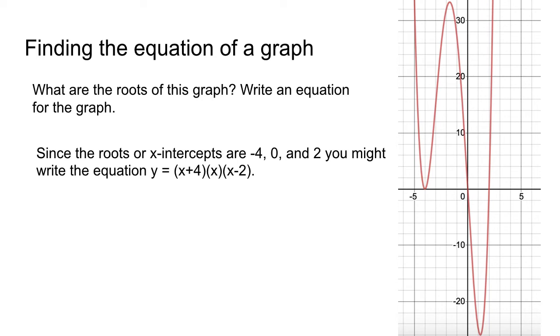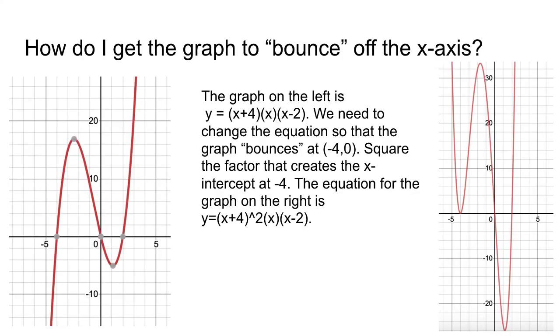But if we were to graph that (x + 4) times x times (x - 2), we would get this graph on the left. So here again I have a graph that has an intercept at (-4, 0), (0, 0), and (2, 0). But we don't want it to go through at negative 4, we want it to bounce off like the graph on the right. The way that we do that is take that factor, the factor that gives us the negative 4 intercept which is (x + 4), and we're going to square that factor. So now the graph on the right equation is (x + 4) quantity squared times x times (x - 2).